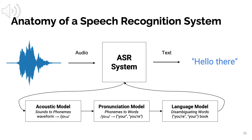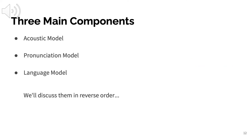For example, if you have 'your book', the language model knows the possessive is typically used, so it chooses that orthographic form. The pipeline runs in a few hundred milliseconds — a really fast process. So you have the acoustic model, the pronunciation model, and the language model. We'll discuss these three components in more detail, starting from the language model and working back to the acoustic model.